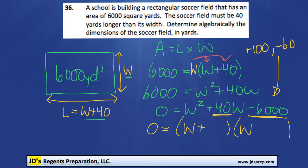All right, that means one of these is going to be W plus 100, and the other one will be W minus 60.